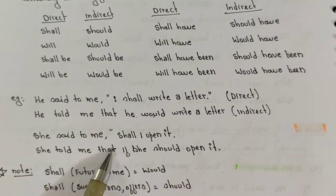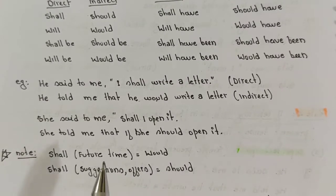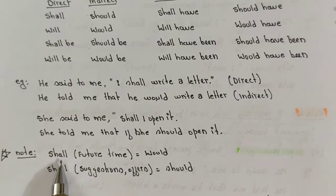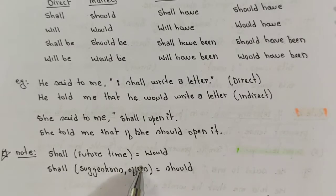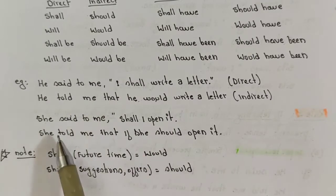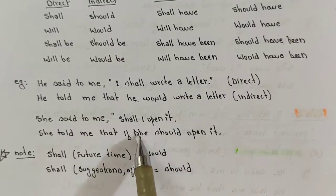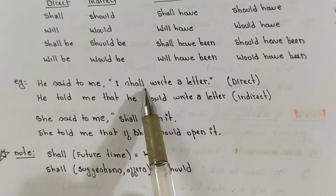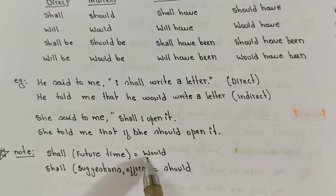Next example: 'She said to me, shall I open it?' This becomes: 'She told me that she should open it.' Important point: when 'shall' represents future time, it changes into 'would'. But when 'shall' suggests or offers something, it changes into 'should'. Here 'shall I open it' is a suggestion, so it changes to 'should'.